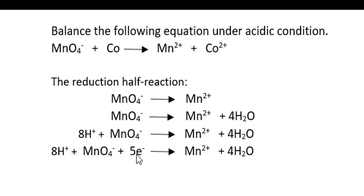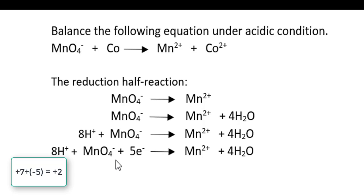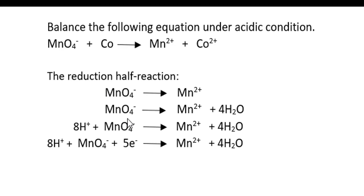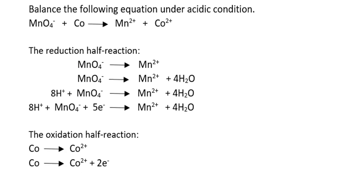To balance the charge, we add five electrons to the left side: +8 and −6 equal +2, matching the right side. Adding five electrons to the left is consistent with this being the reduction half reaction. For the oxidation half reaction, we add two electrons to the right side, because cobalt is losing electrons — zero charge on the left, and −2 plus +2 equals zero.